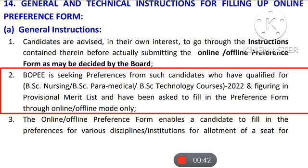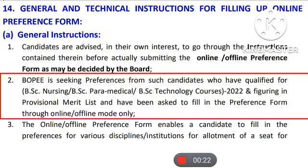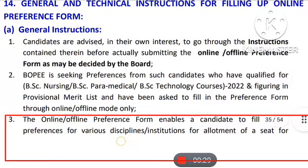The second point tells you that BOPEE will consider candidates' preferences who have qualified as entrants. If your name is in the provisional merit list, the notification will tell you that the marks will be 30 points and they will participate in the first round of counseling.